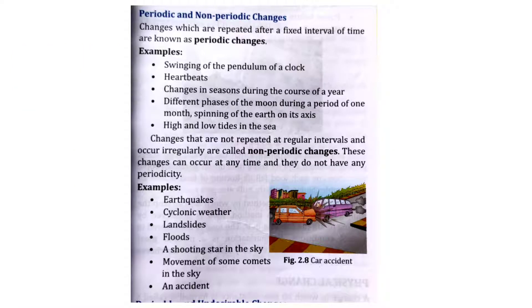The changes which are repeated after a fixed interval of time are known as periodic changes, such as our heartbeat and the swinging of a pendulum of a clock. And the changes that are not repeated at regular intervals and occur irregularly are called non-periodic changes, for example, cyclones, earthquake, landslide, floods, etc.